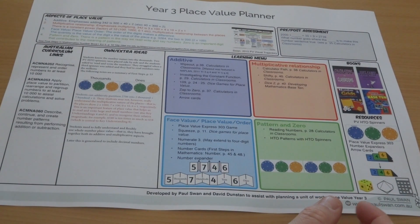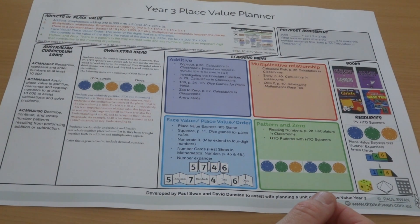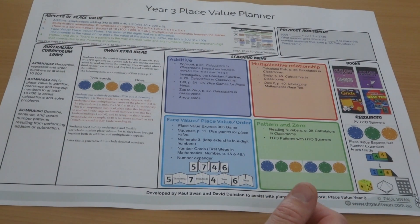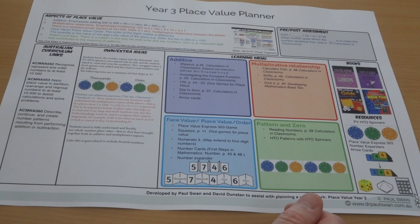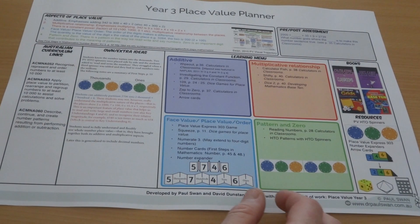I'd like to share this idea that David Dunstan from the independent school sector and I worked on for some time. Basically, we tried to look at the idea of place value and work out why some kids have difficulties and others don't, or why people have difficulties with different facets or characteristics of place value.